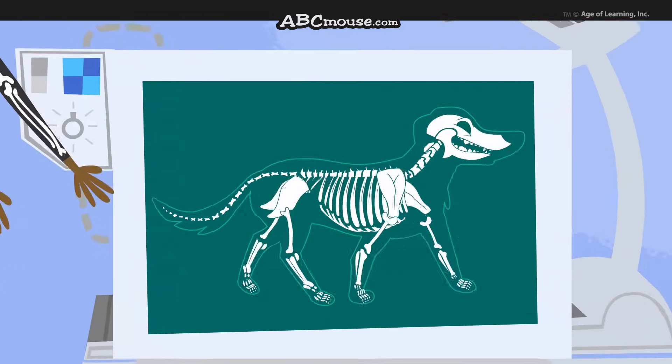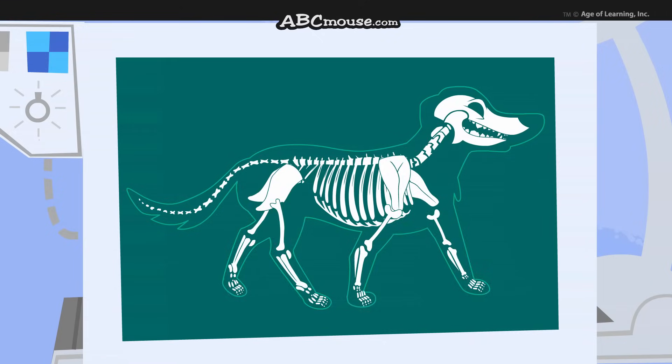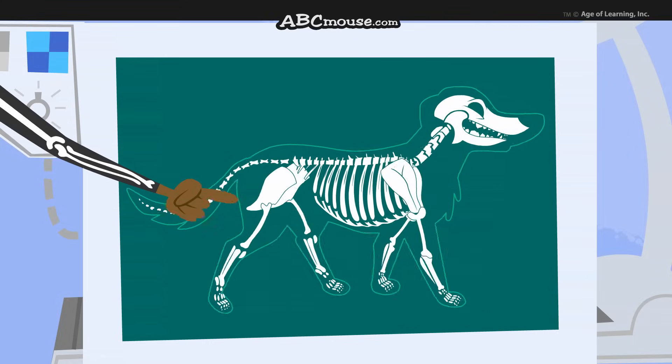This is Jester's skeleton. See those places where the bones meet each other? Those are called joints. These joints right here allow his legs to bend back and forth when he walks.